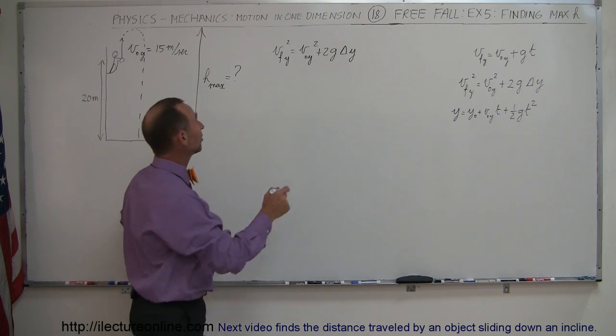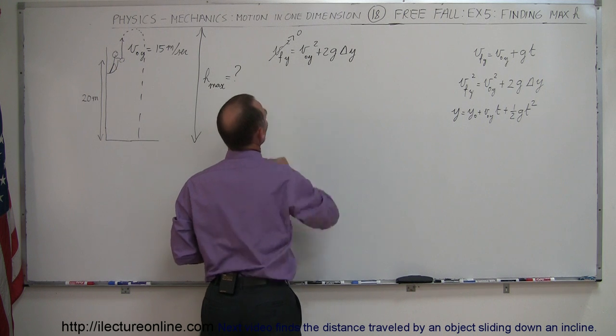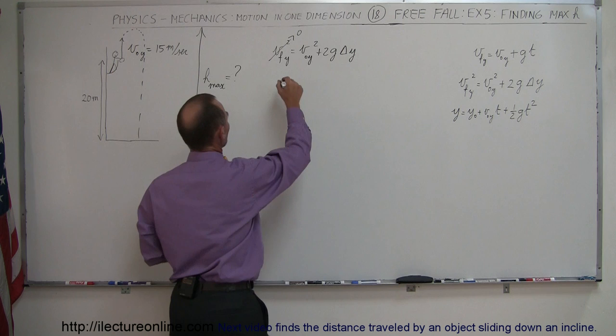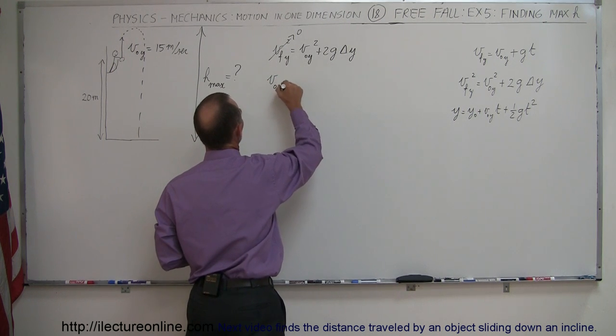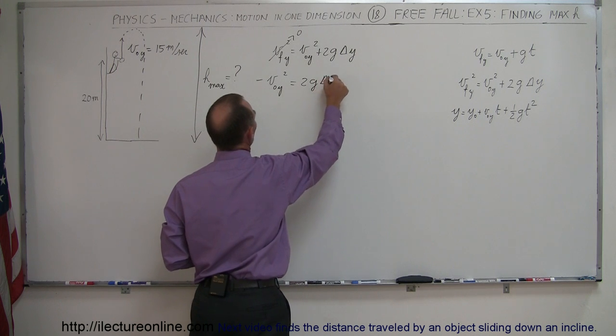Notice that the final height will be zero, so this goes to zero like that. And then if you move the V initial Y squared to the other side, let's do that first. So V initial Y squared that becomes minus when I move it across the equal sign is equal to 2G times delta Y.